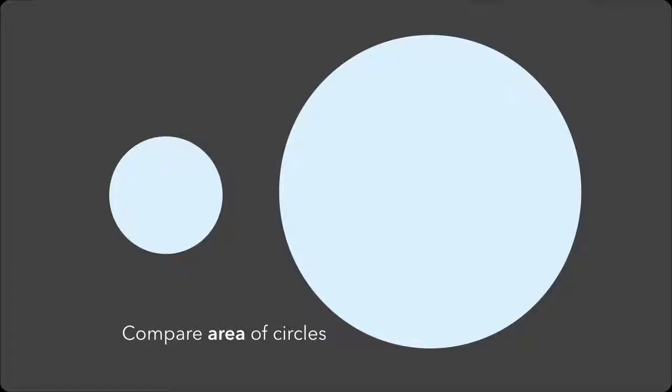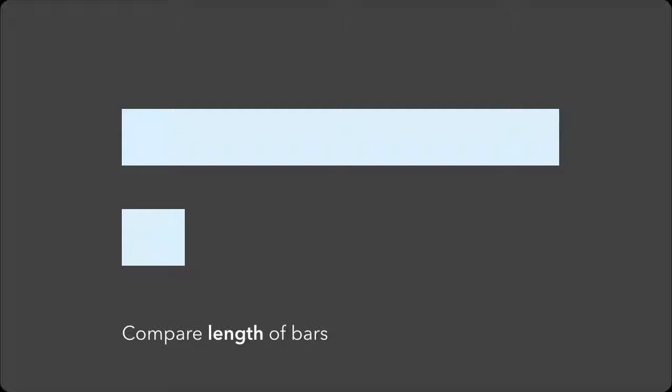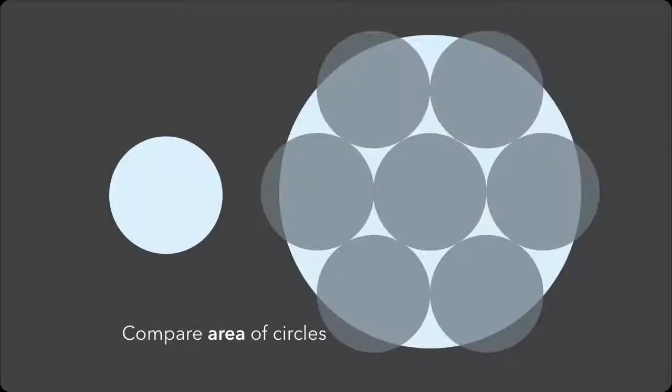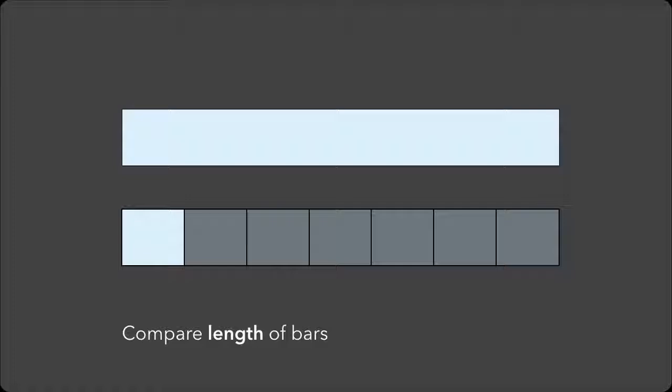A lot of people responded. Now let's try another example. Compare the length of these two bars — how much larger is the big bar than the smaller? It turns out the answer in both cases is the same: it's seven times larger. But if you looked around the room, you noticed that despite the same underlying difference, people were much more accurate and showed less variance overall when comparing length than area. While this was hardly a scientific poll, my group and others have conducted experiments like this in controlled settings.